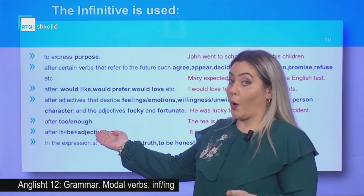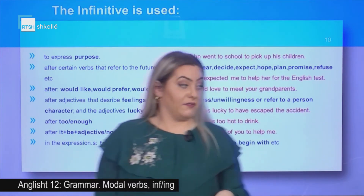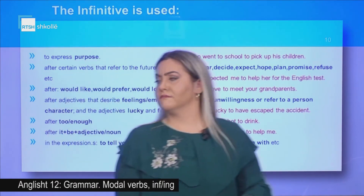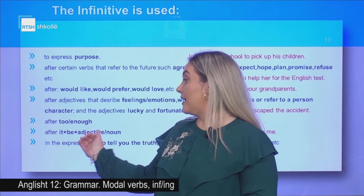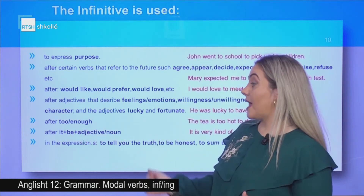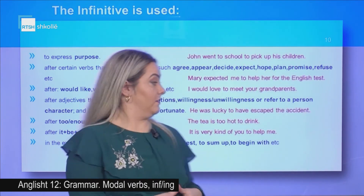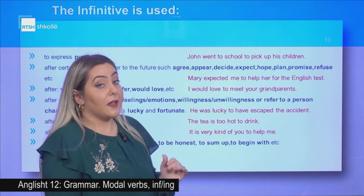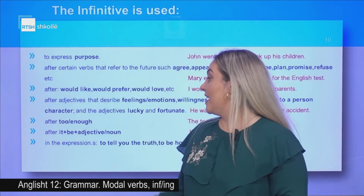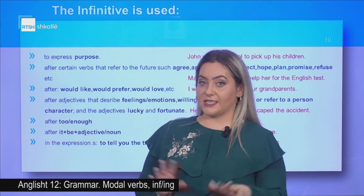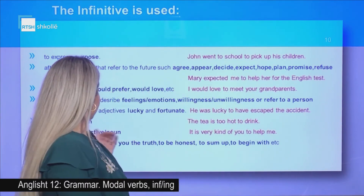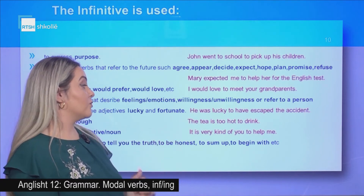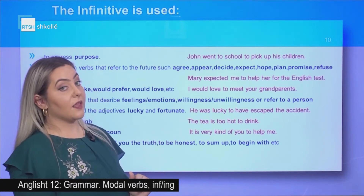The to-infinitive is used after 'too' or 'enough'. Example: The tea is too hot to drink. Also after 'it' plus 'be' plus adjective or noun. Example: It is very kind of you to help me. And in expressions such as: to tell you the truth, to be honest, to sum up, to begin with, etc.